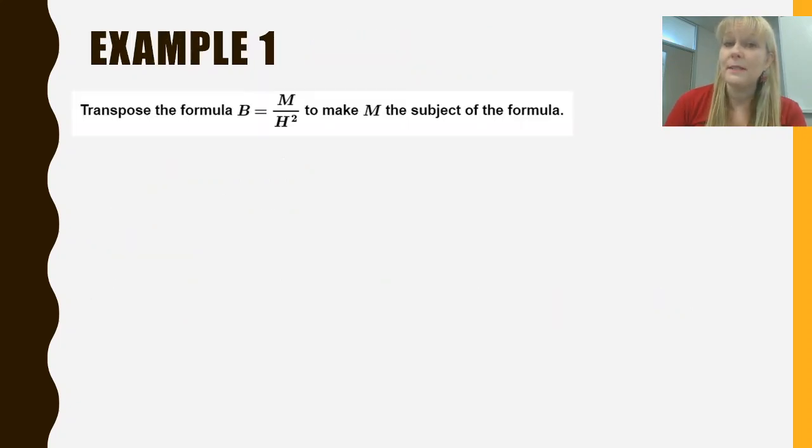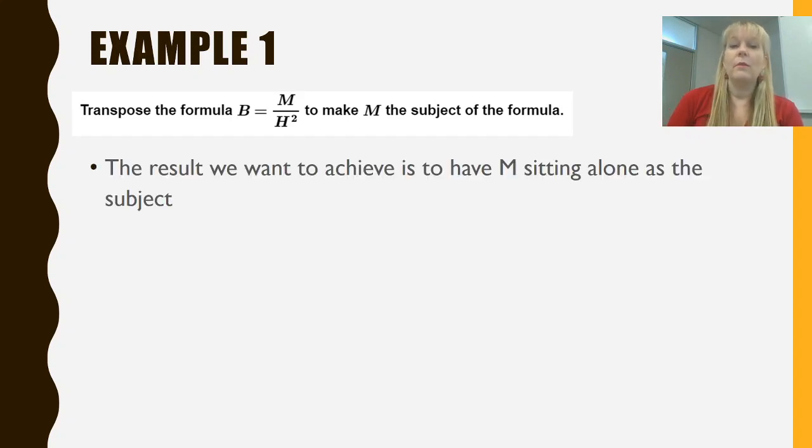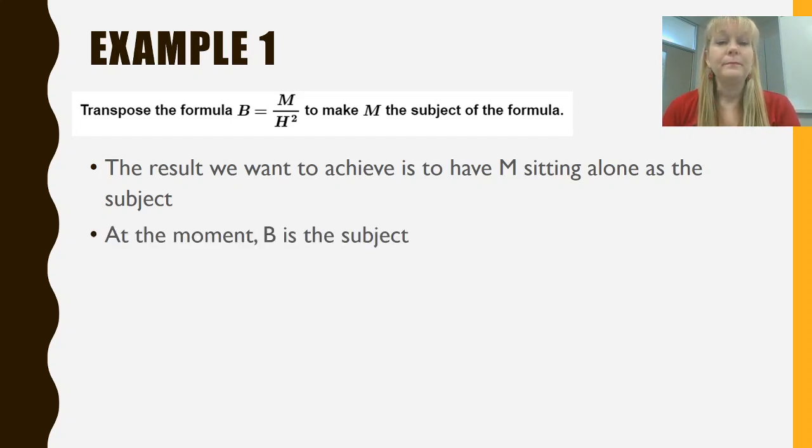So I'm going to do 3 examples today. The first example is b equals m over h squared and we want to make m the subject of the formula. So before we start we need to think about and have a look at the formula itself. Our objective when we're told to make m the subject is we want m sitting all by itself on one side of the equation and everything else that would be b and h squared sitting on the other side of the equation with the equal sign in between them. And at the moment we can see that b is the subject.